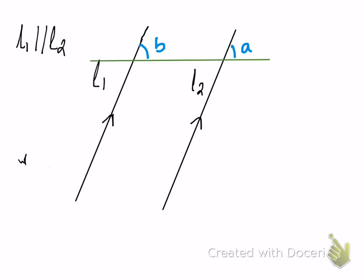Now because line 1 and line 2 are parallel to each other, these two angles will be the same. And this property is called corresponding angles.